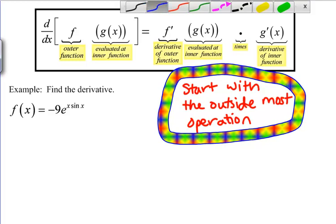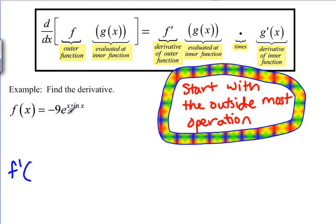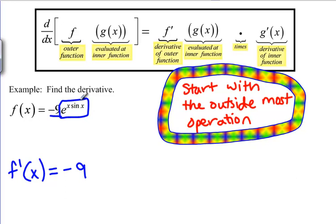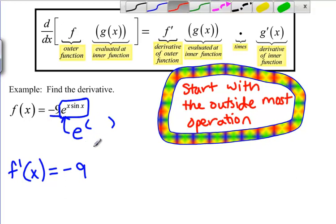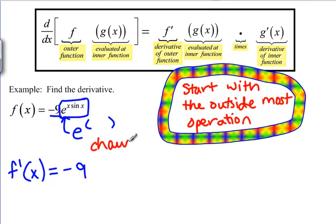We're going to start with the outermost operation. The outermost thing going on in negative 9 e to the x sine x is the multiplying by negative 9. Multiplying by negative 9 is a constant and it just comes along out front. Now that we've taken care of that part, if we look at e to the x sine x, the outermost thing going on there is the e. The chain rule — the composition of e with these other functions — is the outermost thing.